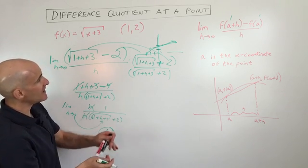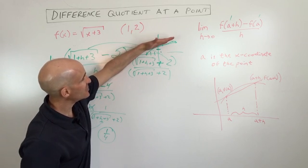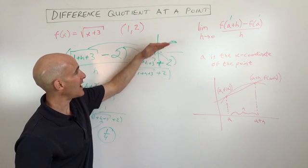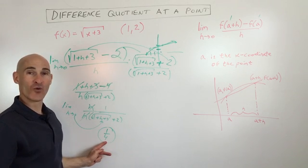So what that tells us is that the instantaneous rate of change, the slope of the tangent line at this point, one comma two, is going to be one fourth.